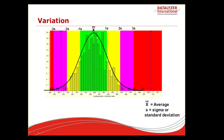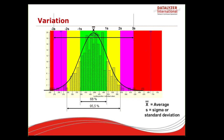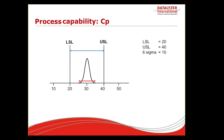We can show the average in the middle, with the one-sigma zone between the average and one times the standard deviation, yellow as the two-sigma zone, and purple as the three-sigma zone. We know a lot about normal distributions: 68% of measurements fall between the average ±1 sigma, 95% between ±2 sigma, and 99.7% between ±3 sigma. In the capability index, process variation is defined as six times the standard deviation. There is a slight chance — 0.3% — that measurements fall outside that range, but that is what is used in capability calculations.